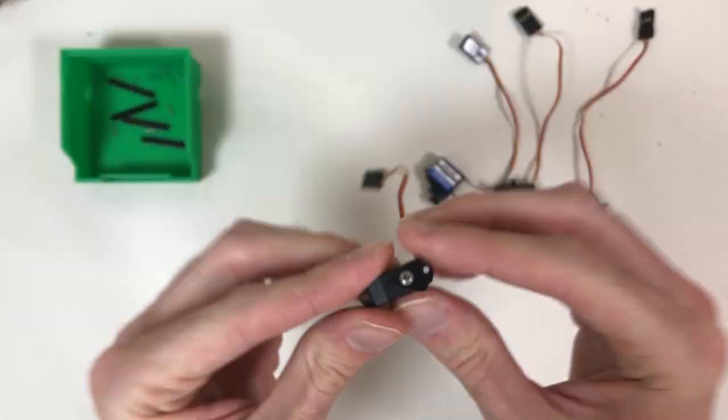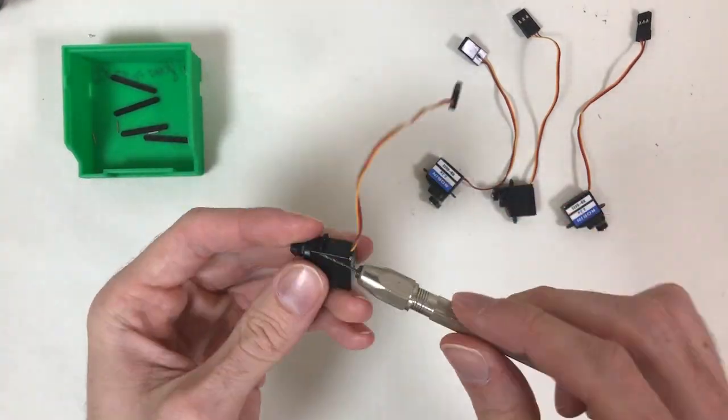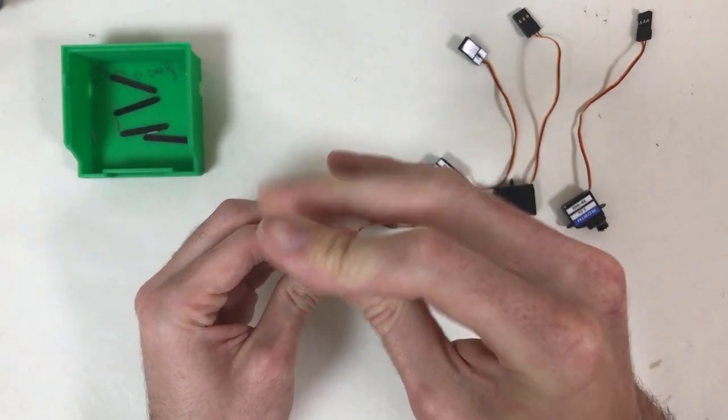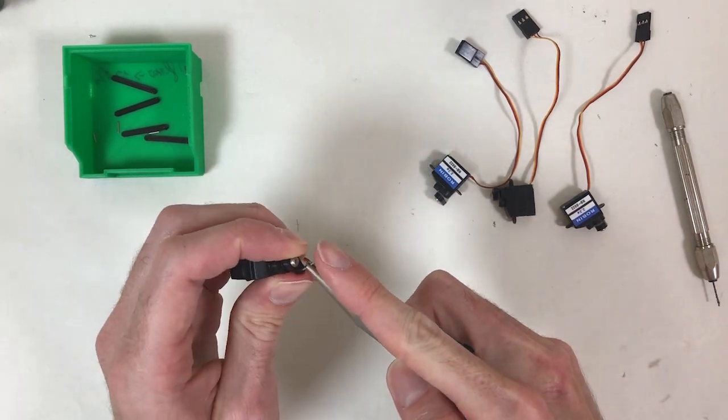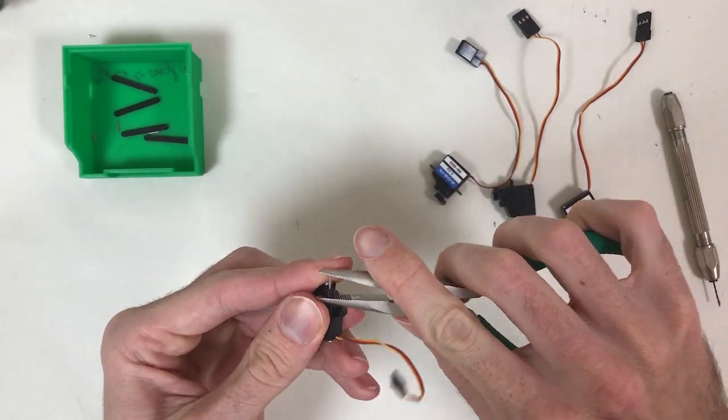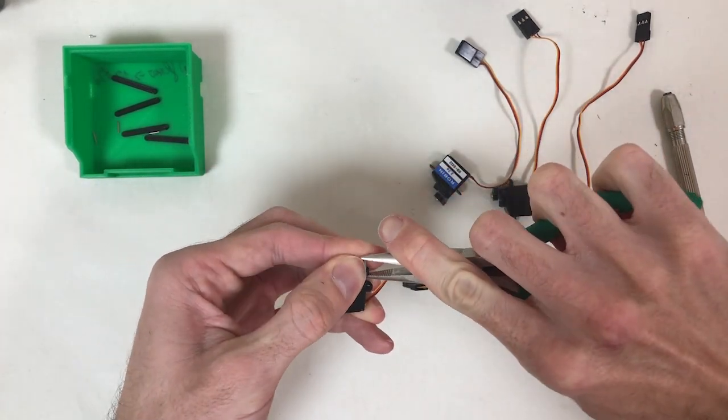First, we assemble the servo mechanism that makes the fin fold and unfold. These are the servo motors used in the interstage. As you can see, they are very, very tiny.